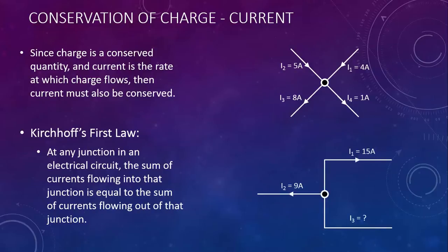Here's another example. I1 is 15 amps flowing out of the junction. I2 is 9 amps flowing out of the junction. What would I3 be?